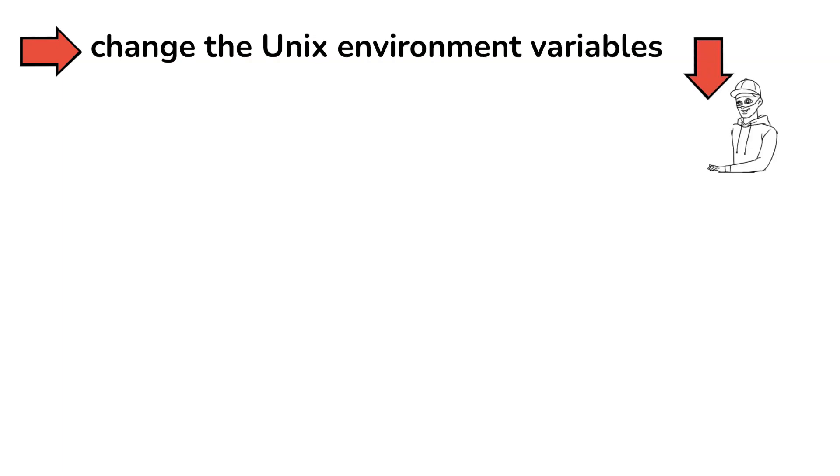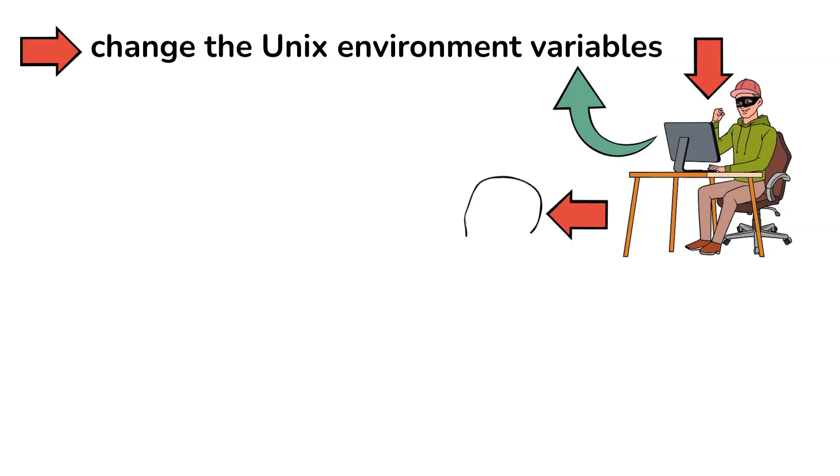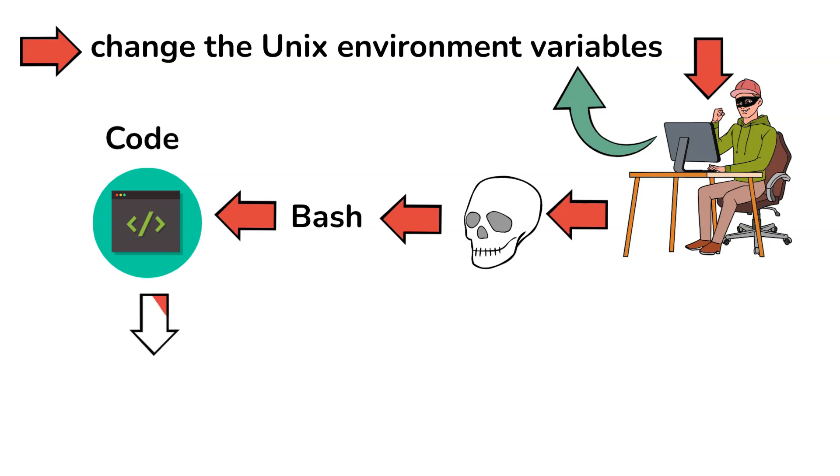What this bug does is change the unix environment variables to allow a hacker to manipulate these variables to inject malicious code into bash and basically execute code remotely on any target system that would use unix.